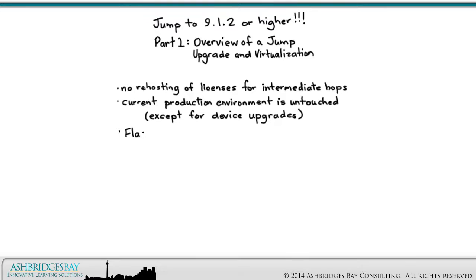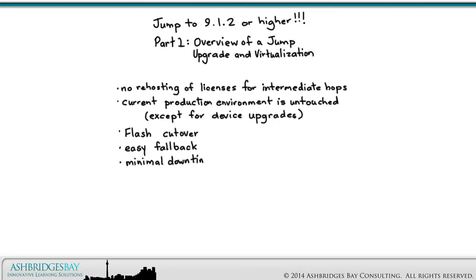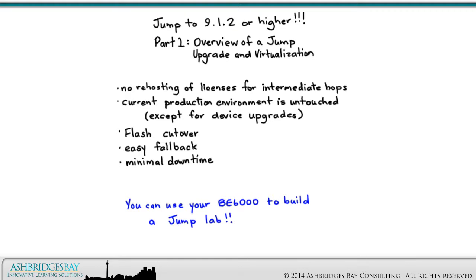Flash cutover: everything will be cut over at once in the smallest possible maintenance window. Easy fallback: if you decide to roll back for some reason, it's easy — your current production cluster is untouched. Minimal downtime: you will have a series of small maintenance windows for device upgrades and a single larger window for the actual cutover. We'll show you how to use your BE 6000 or 7000 as a jump lab.